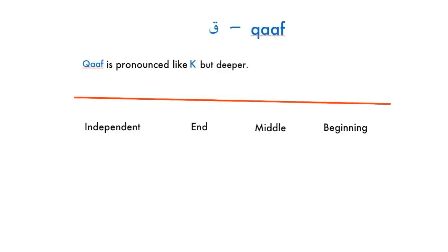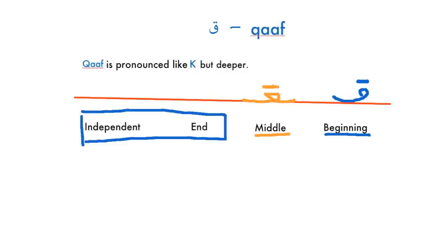In the beginning, we write it like this. In the middle, we write it like this. At the end, when it's connected, you write it like the letter FA but you go down the line and make a half circle. In independent form, it's like the connected form but it goes below the line.